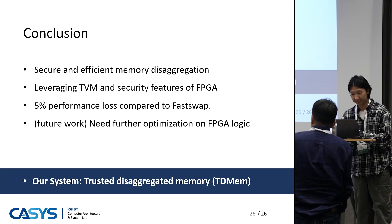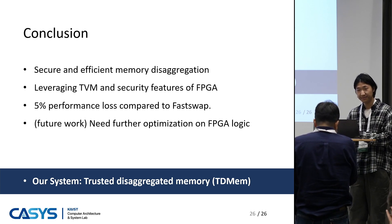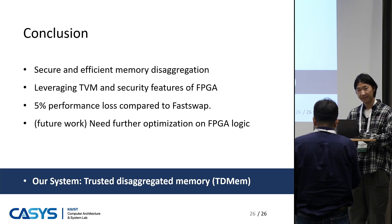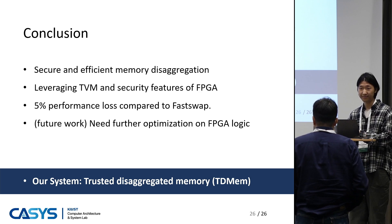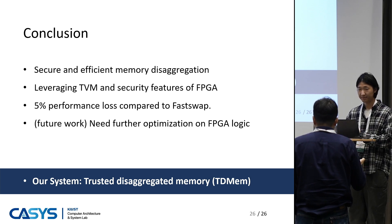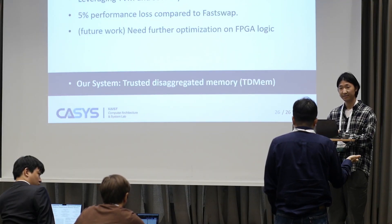Nice talk. I just have a few high-level questions. In this work you basically assume RDMA-based page-granularity remote disaggregated memory, but with the rise of new technologies such as CXL, which allows you to access remote memory in byte granularity without going through the swapping mechanism. The first question is how would the problem change? Is the same problem present even if we replace this mechanism with CXL-like byte-granularity interconnects? And if so, the second question is whether you can apply your solution to that kind of environment as well.